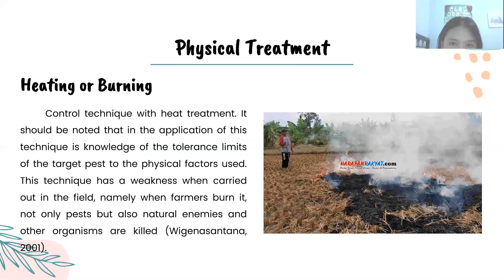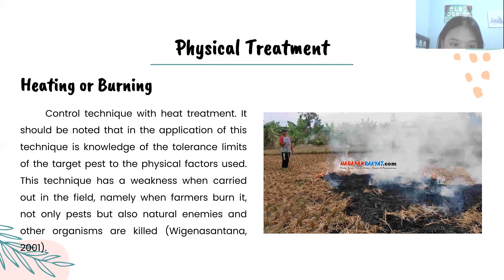The first type of physical treatment is heating or burning. As a control technique with heating treatment, it should be noted that application of this technique requires knowledge of the tolerance limit of the target pest to the physical factor used. This technique has a weakness when carried out in the field: when farmers burn, not only pests but also natural enemies and other organisms are killed.